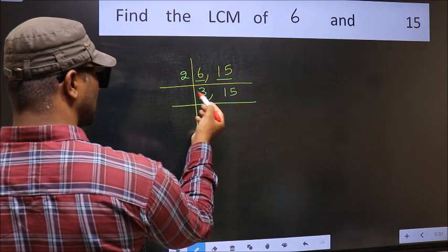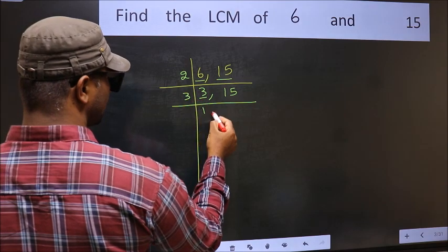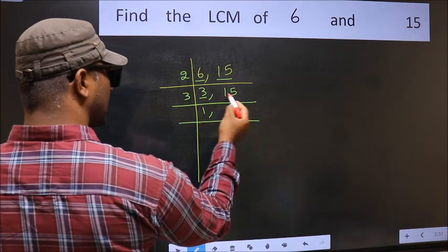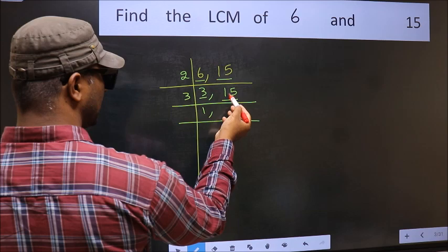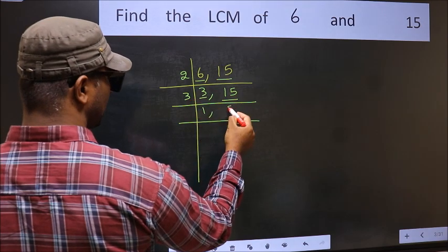Now here we have 3. 3 is a prime number so 3, 1 is 3. The other number 15, when do we get 15 in the 3 table? 3, 5 is 15.